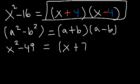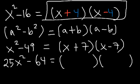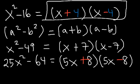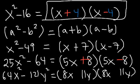Try x² - 49: that factors as (x + 7)(x - 7). Now for 25x² - 64, the square root of 25x² is 5x and the square root of 64 is 8, giving (5x + 8)(5x - 8). For 64x² - 121y², the square root of 64x² is 8x and the square root of 121y² is 11y, so the answer is (8x + 11y)(8x - 11y).